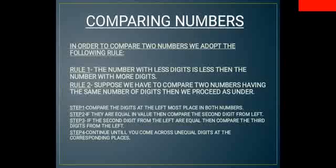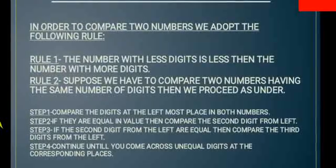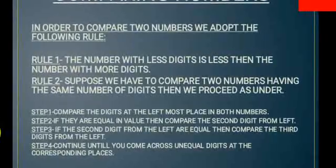Rule 2: If we have to compare two numbers having the same number of digits then we proceed as another. This means if we are comparing two four digit numbers or two three digit numbers which have the same number of digits, then we have to compare the digits at the leftmost place in both numbers. If they are equal in value then we compare the second digit from left.